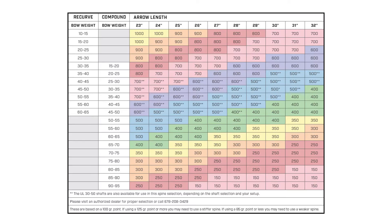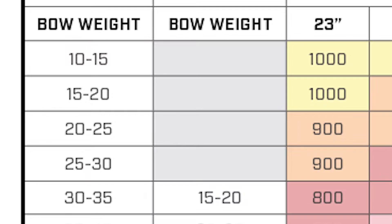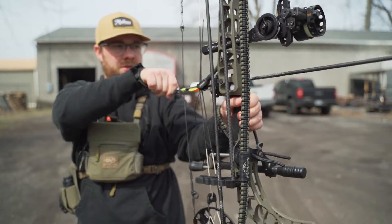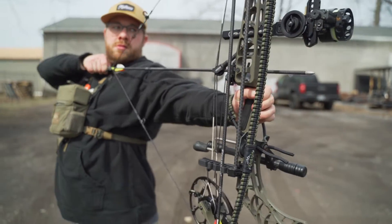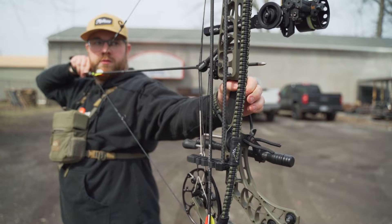When you start looking at bow metrics — your draw length, your draw weight, your arrow length — that static spine chart is going to tell you what spine you need to shoot out of that bow. If you're underspined, it causes a world of problems, which I know firsthand.